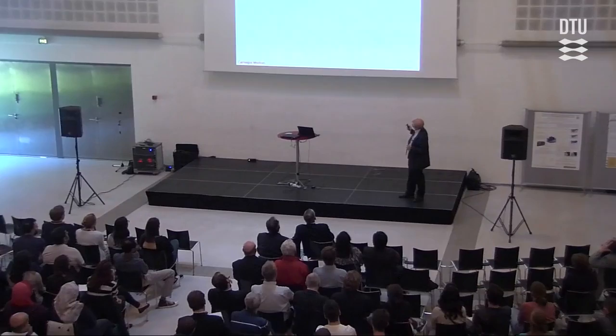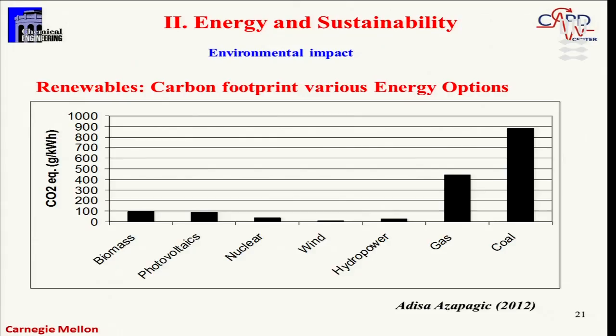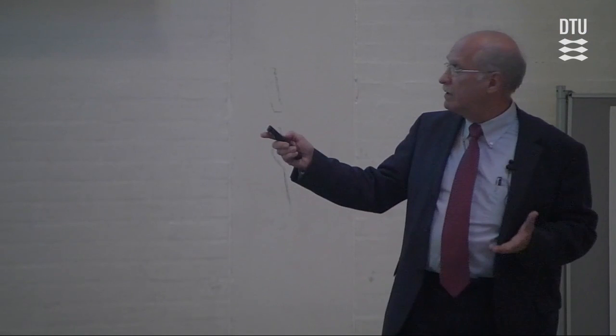Now let's talk about energy and sustainability. One concern is the carbon footprint of various energy options. Coal is one of the most offending components in terms of CO2 emissions. Natural gas reduces CO2 emissions by about half, but these are still significant. Options like biomass, photovoltaics, nuclear, wind, and hydropower are alternatives. The challenge is how to make these alternative technologies competitive with fossil fuels, whether coal or natural gas.